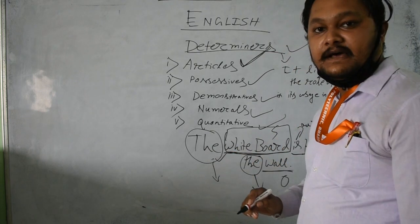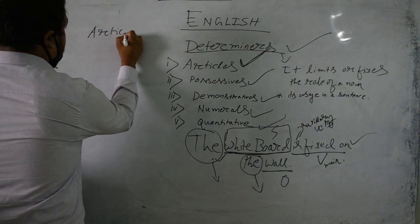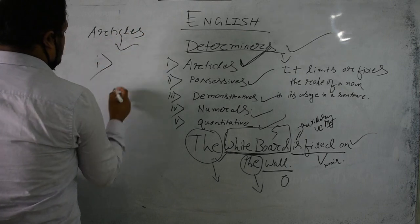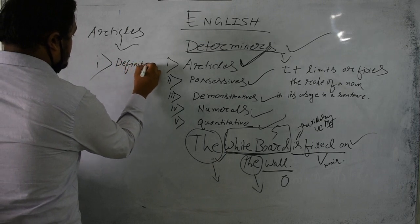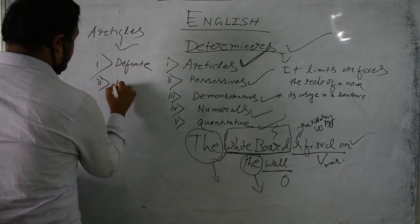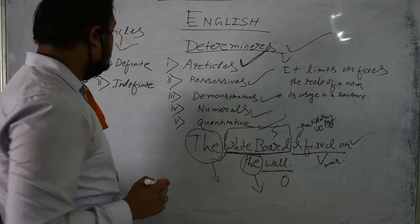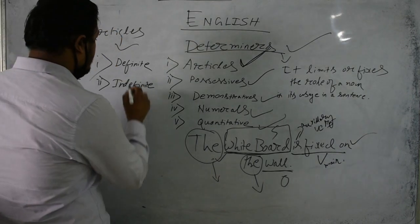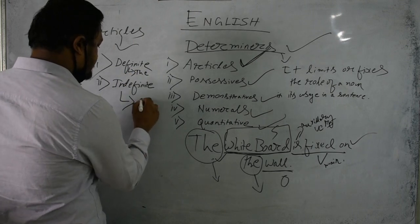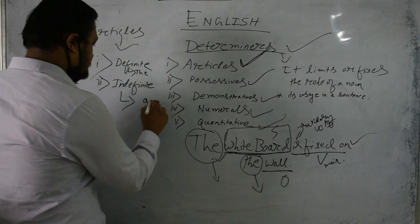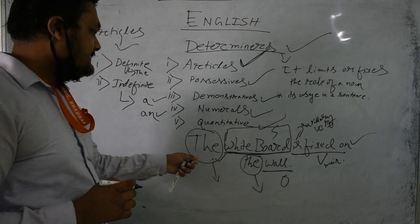'The' always particularizes the noun. When we come to articles, there are two types: the first is definite, the second is indefinite. The definite article is only one type and it is called 'the.' Indefinite articles are of two types: 'a' and 'an.' The usage of 'a' and 'an' comes under indefinite, and the usage of 'the' comes under definite.